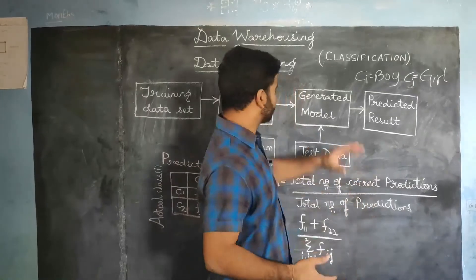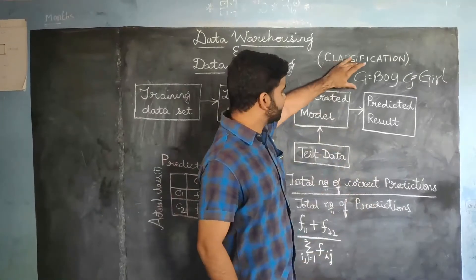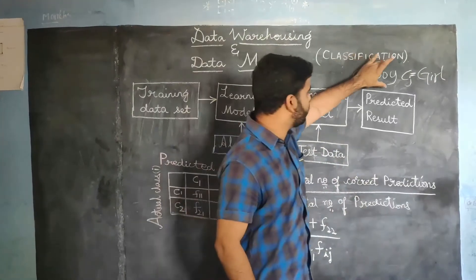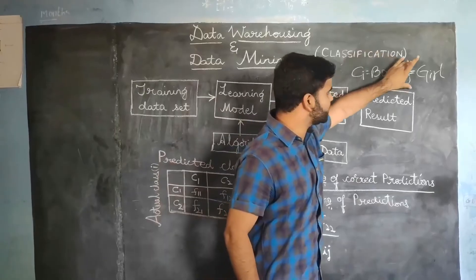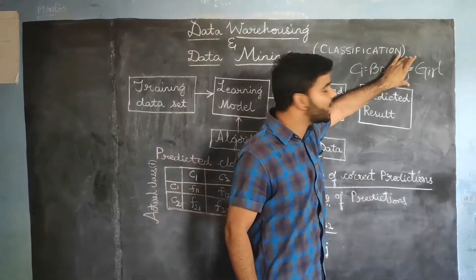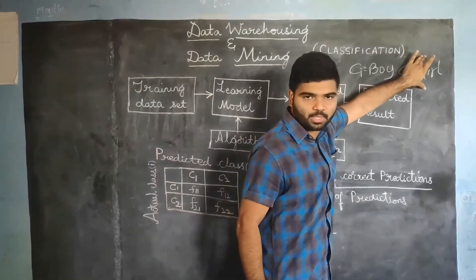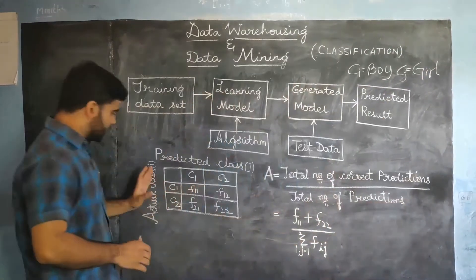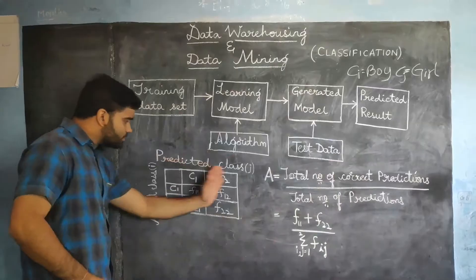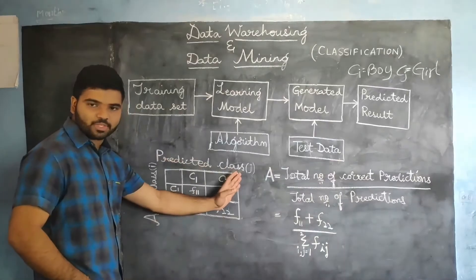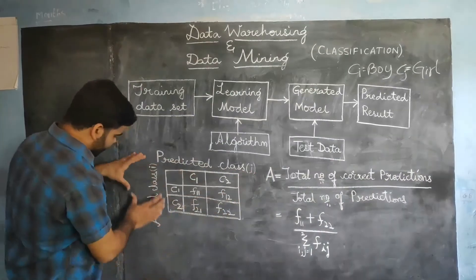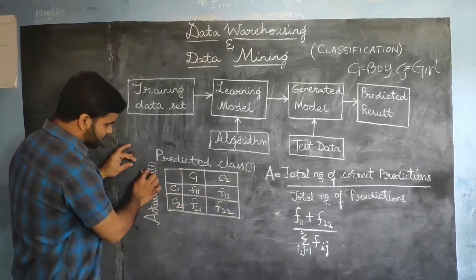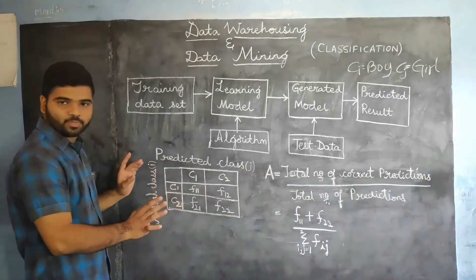Let us assume CI as the class of boy and CJ as the class of girl. The columns consist of the predicted class J and the rows consist of the actual class I.